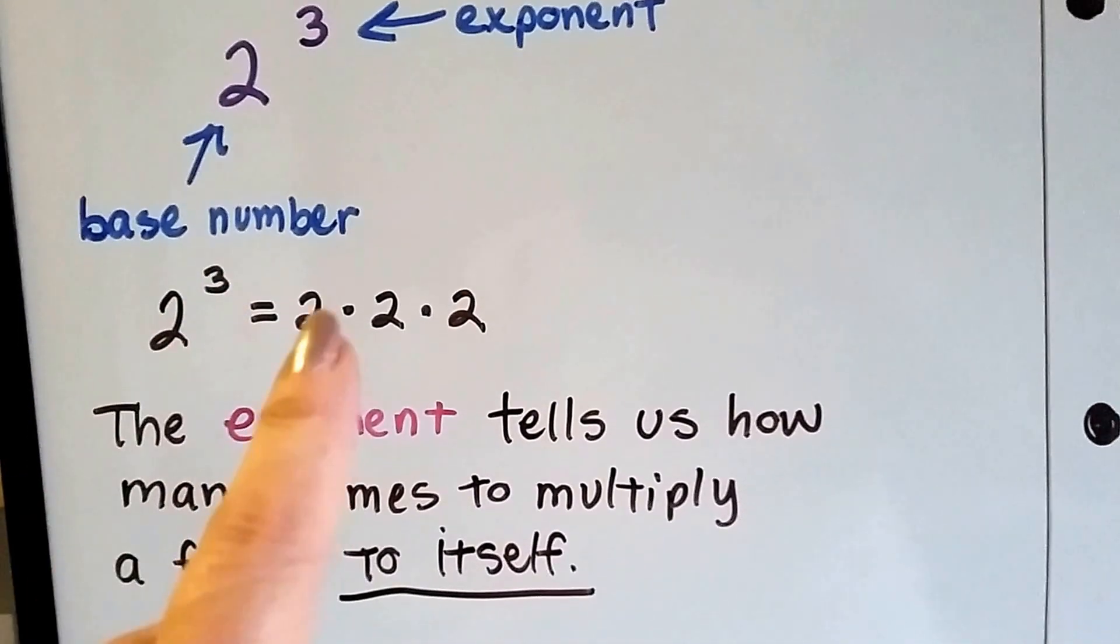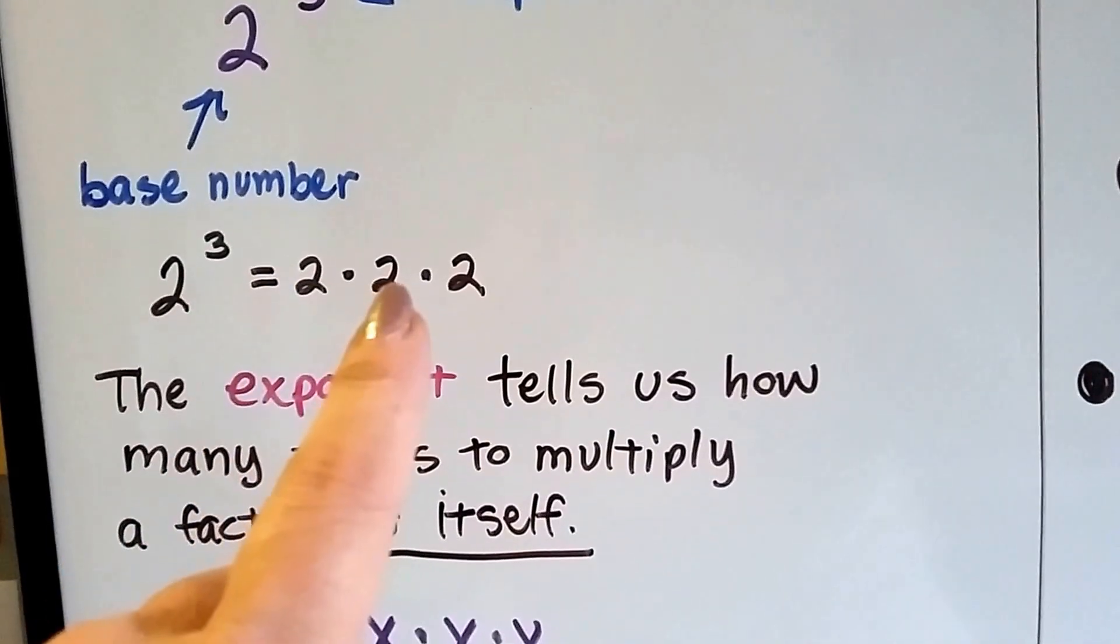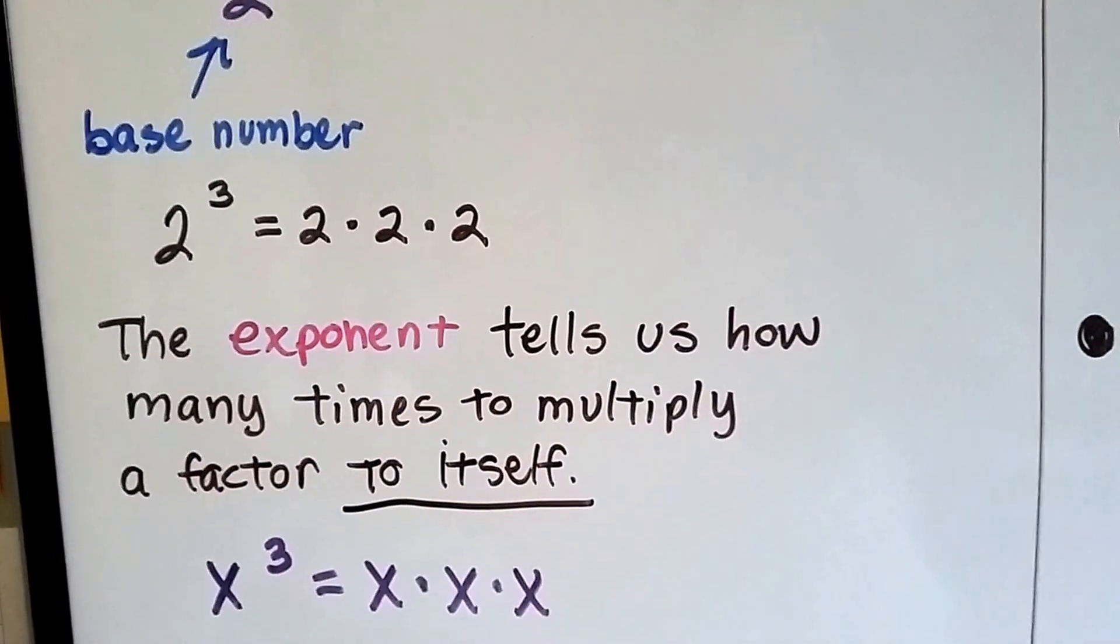So it's saying we need 3 2s: 1, 2, 3. 2 times 2 is 4 times 2 is 8. 2 to the third power equals 8.